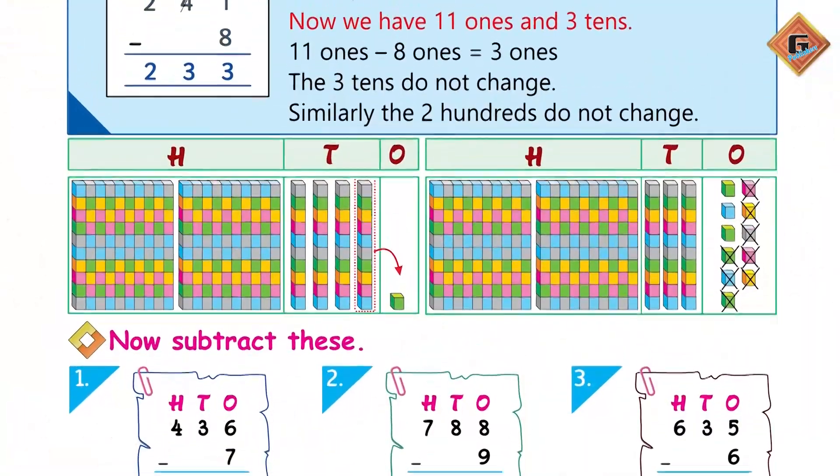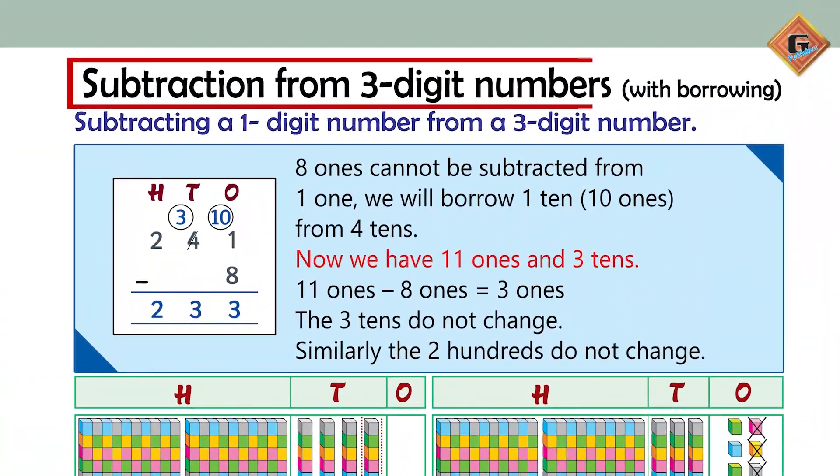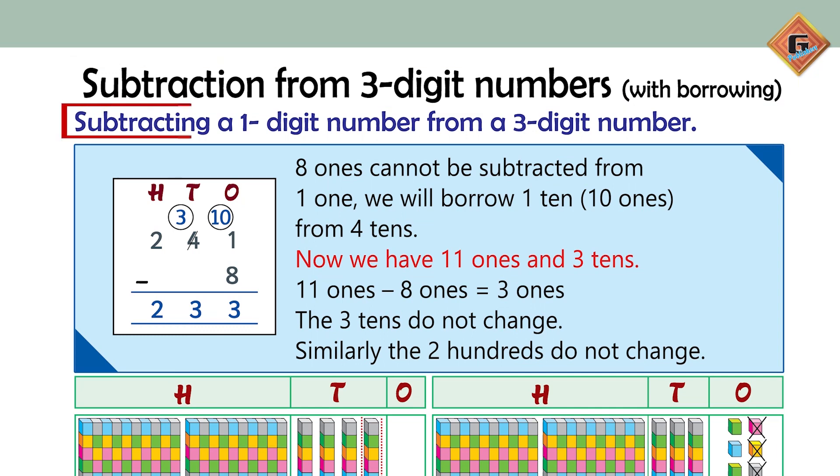Today we are going to start our lesson from page 68 of Unit 2 of Gohar Mathematics for Class 2. The title of page 68 is subtraction from 3-digit numbers with borrowing. Subtracting a 1-digit number from a 3-digit number: the digits are 241 minus 8. 8 ones cannot be subtracted from 1.